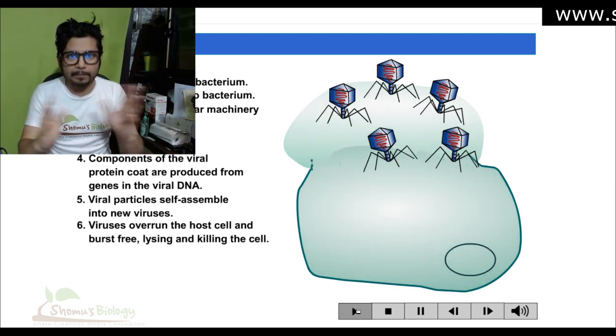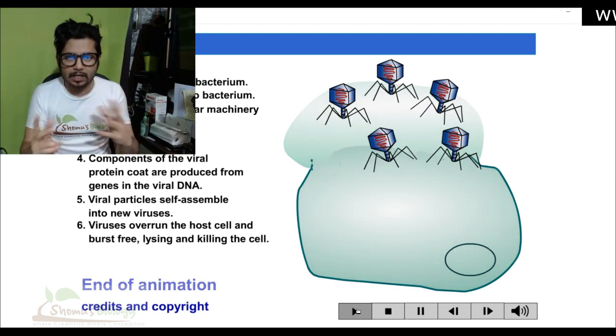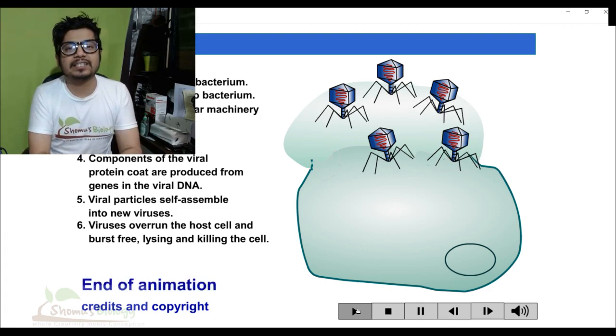Once packaging is done, the virus bursts the cell open, kills the host cell, and all the phage particles are released. That completes the lytic cycle. This lytic cycle is regulated by multiple important factors encoded in the phage DNA. Key among these are the N protein and the Cro protein, both of which play a very important role in the lytic cycle.